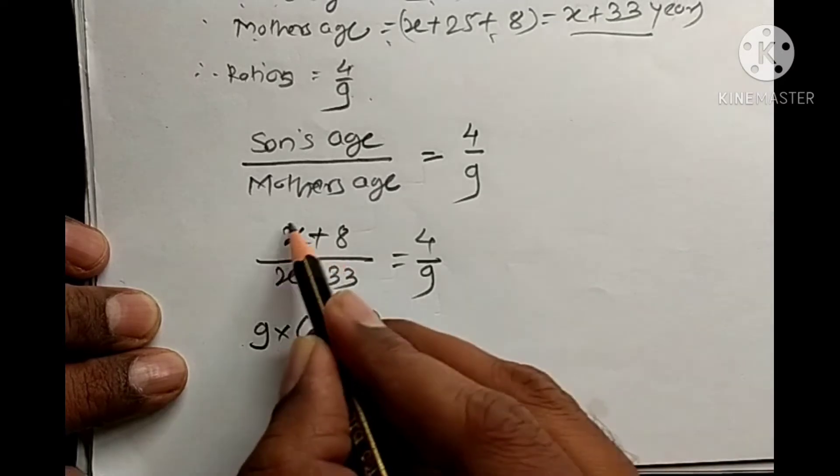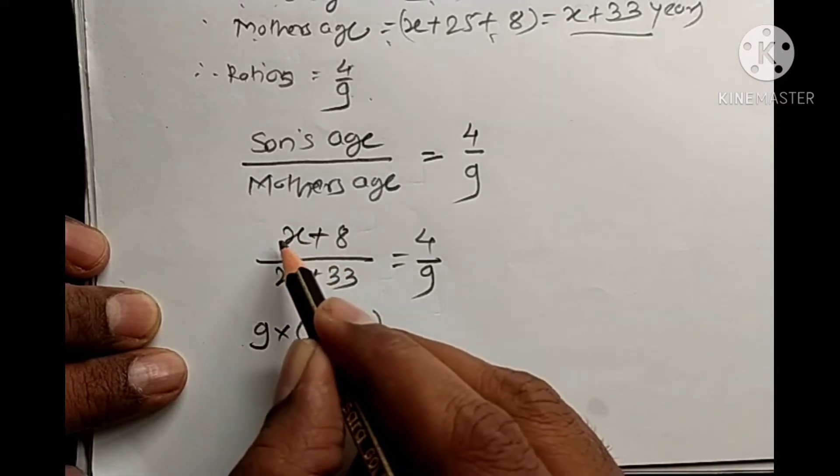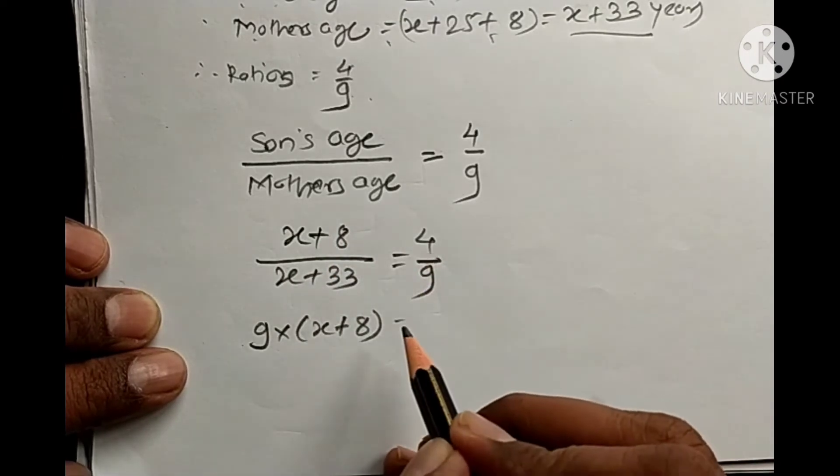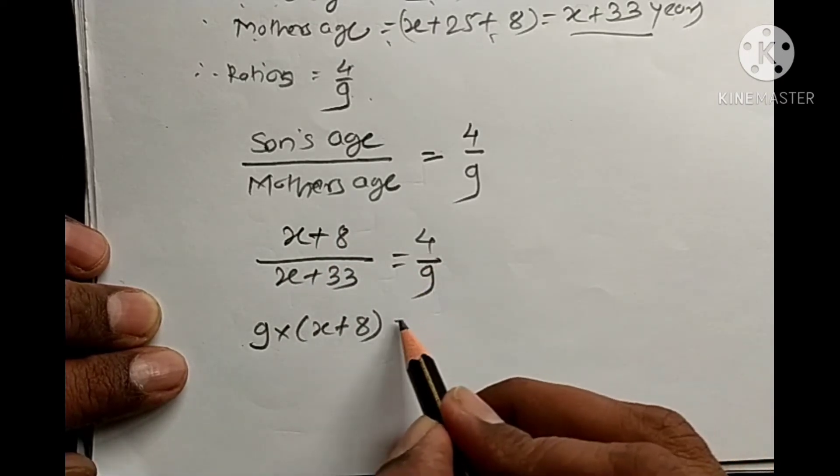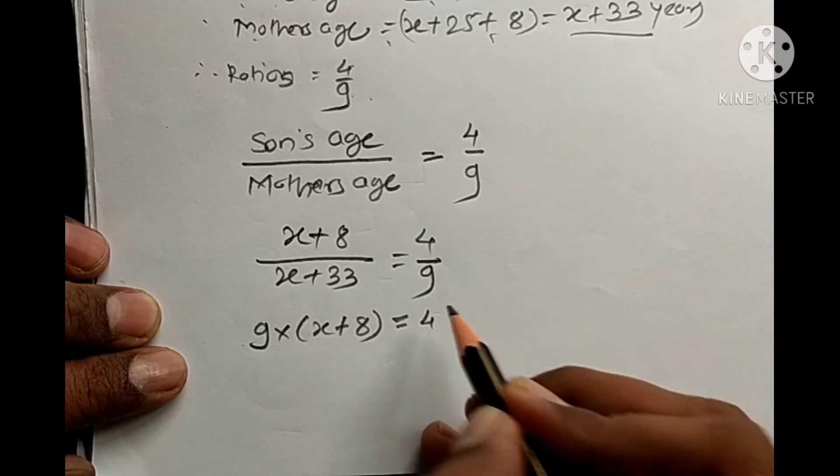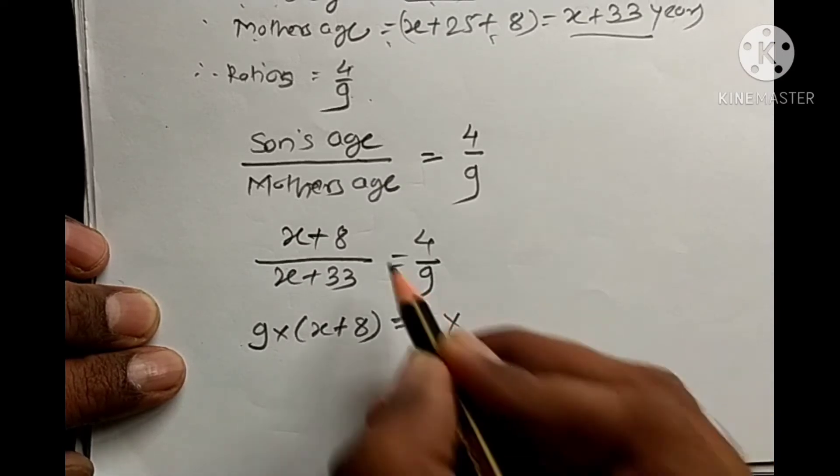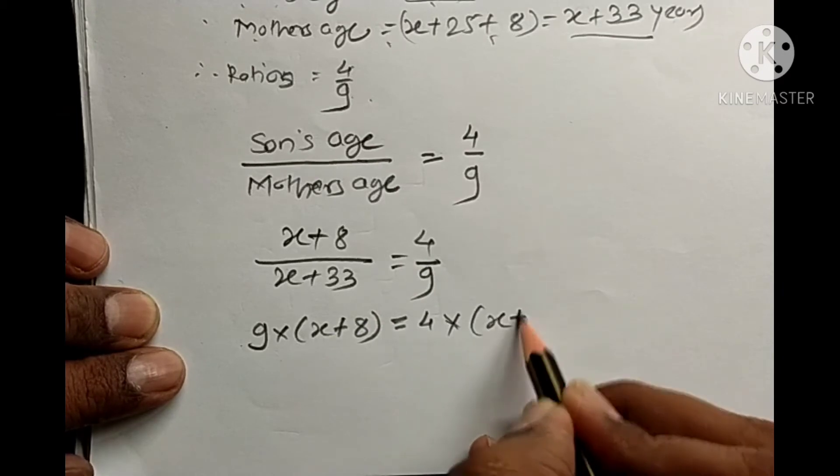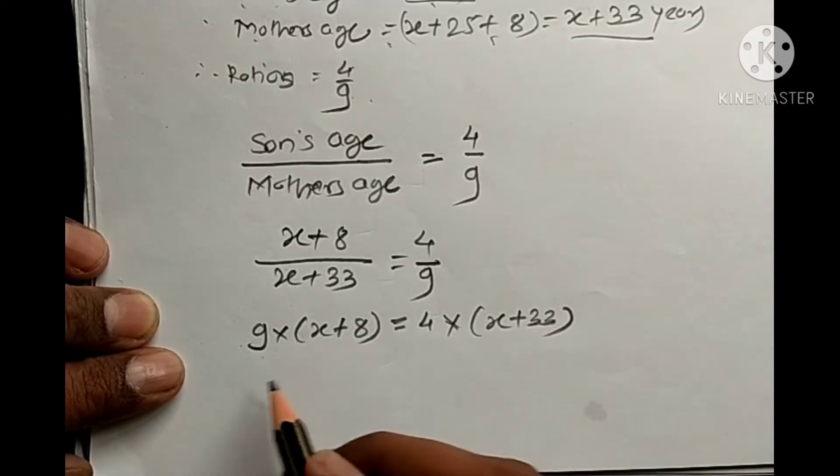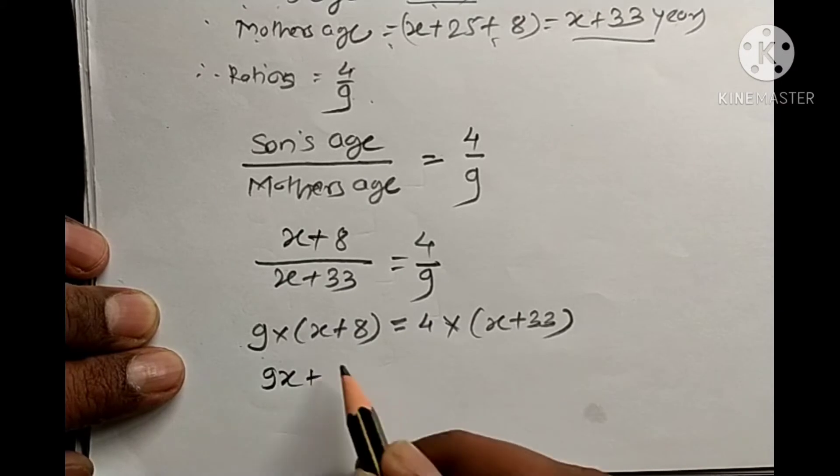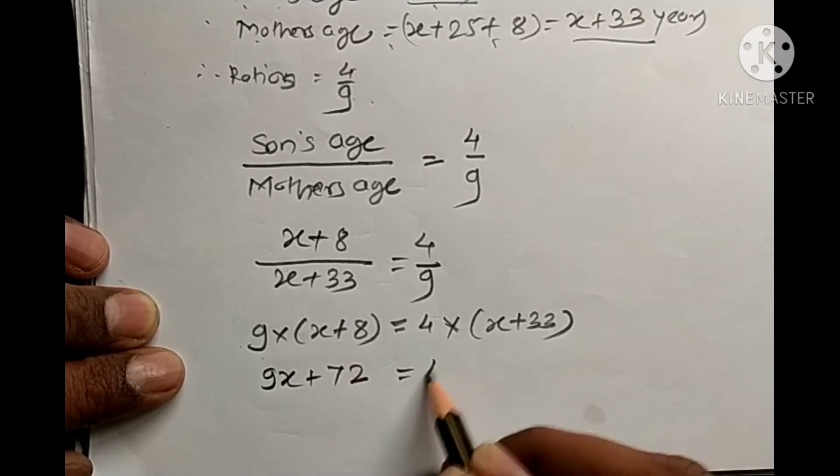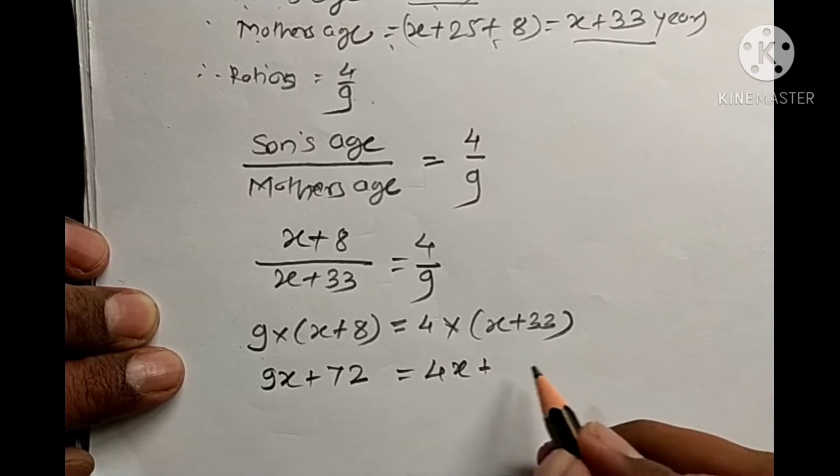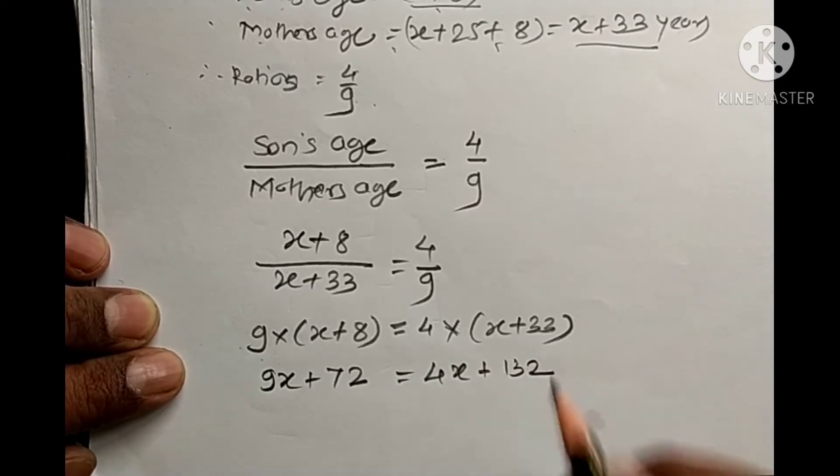So x plus 8 upon x plus 33 equals 4 upon 9. Cross multiplying: 9 times x plus 8 equals 4 times x plus 33. This gives us 9x plus 72 equals 4x plus 132.